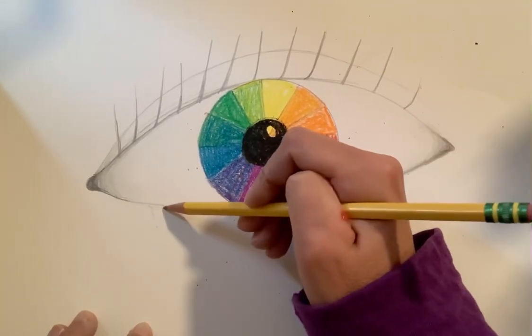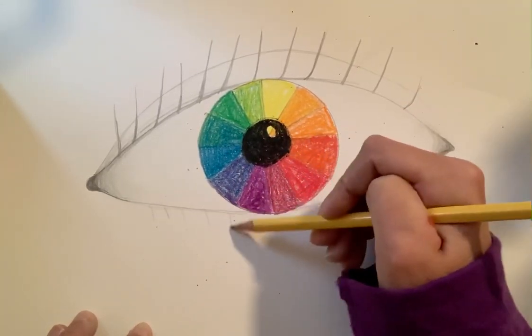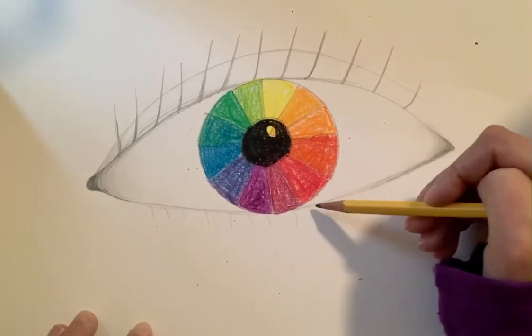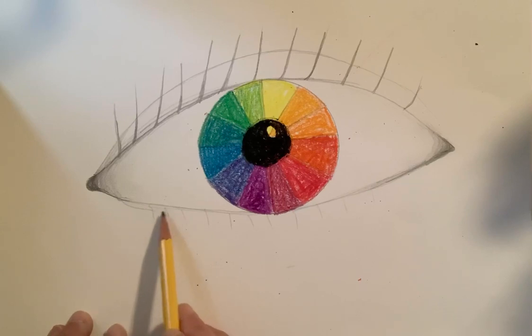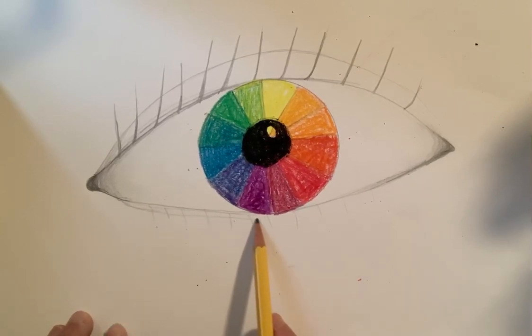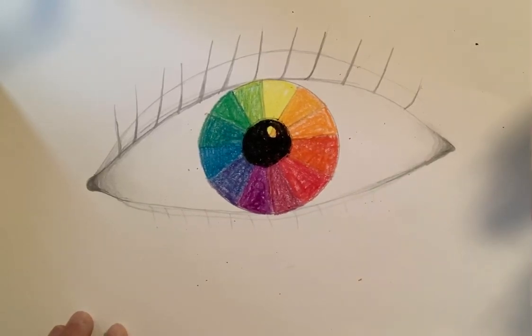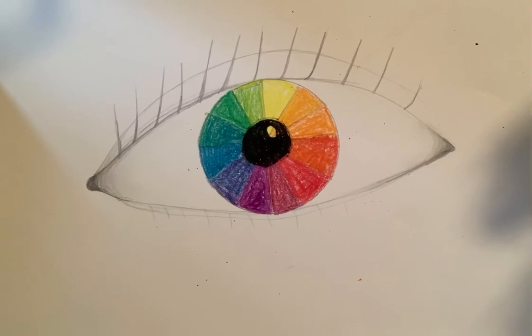You could also add some smaller ones if you wanted to bottom. You could add an extra little eye piece on the bottom. These are all choices that you could make. And there we have our basic color wheel eye. We'll see you next time.